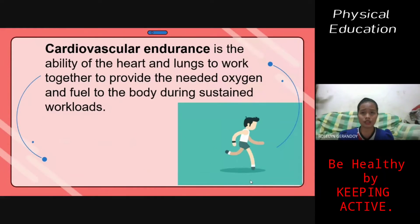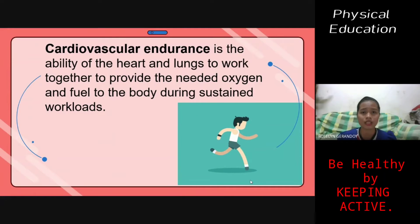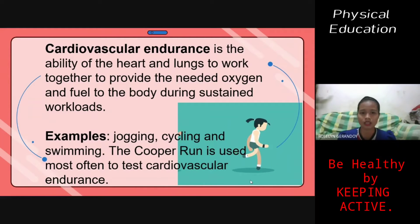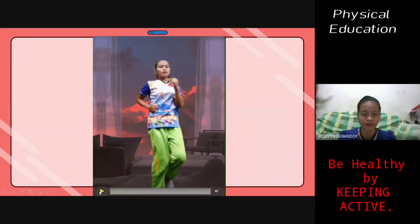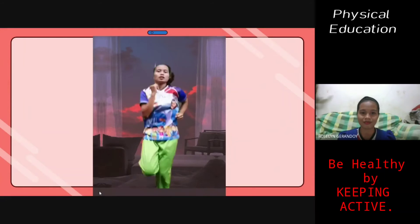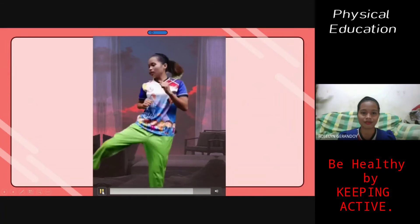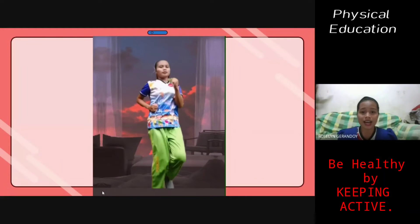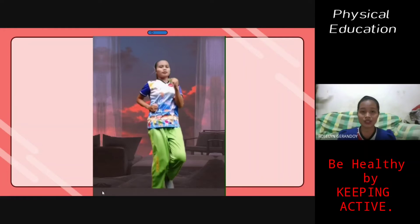Cardiovascular endurance is the ability of the heart and lungs to work together in order to provide the needed oxygen and fuel to the body during sustained workloads. Examples include jogging, cycling, and swimming. The Cooper Run is most often used to test cardiovascular endurance. In the video demonstration, I am jogging and kicking, and by that, the ability of my heart and lungs are working together to provide the needed oxygen to my body.